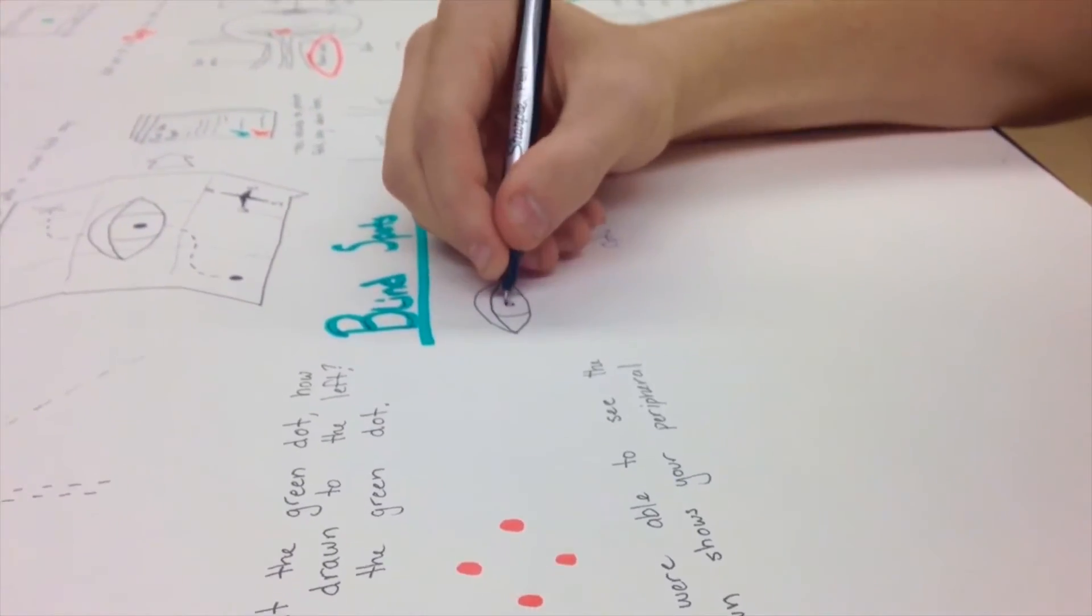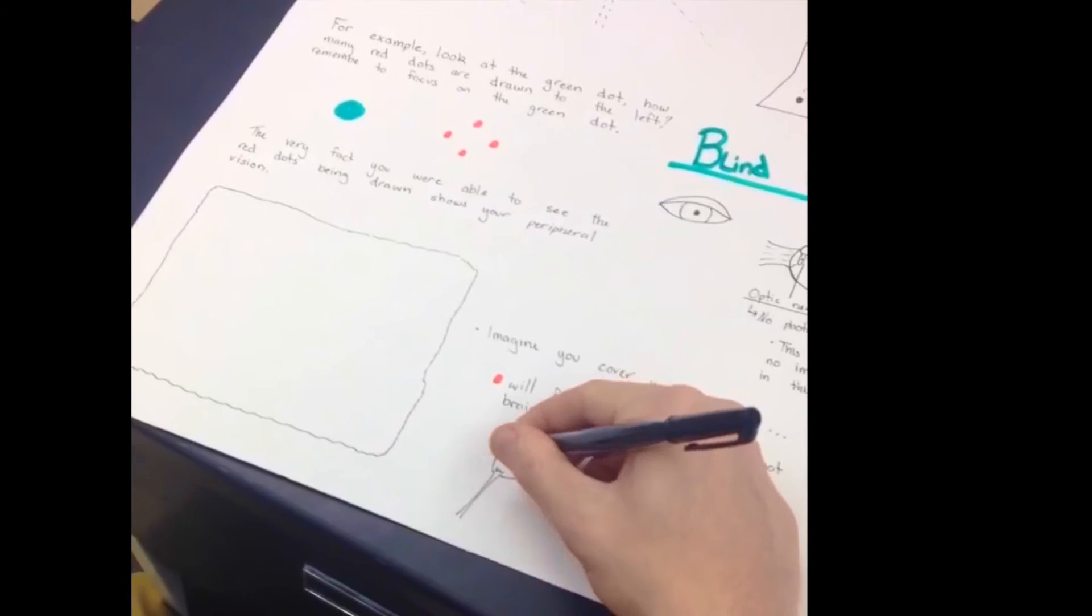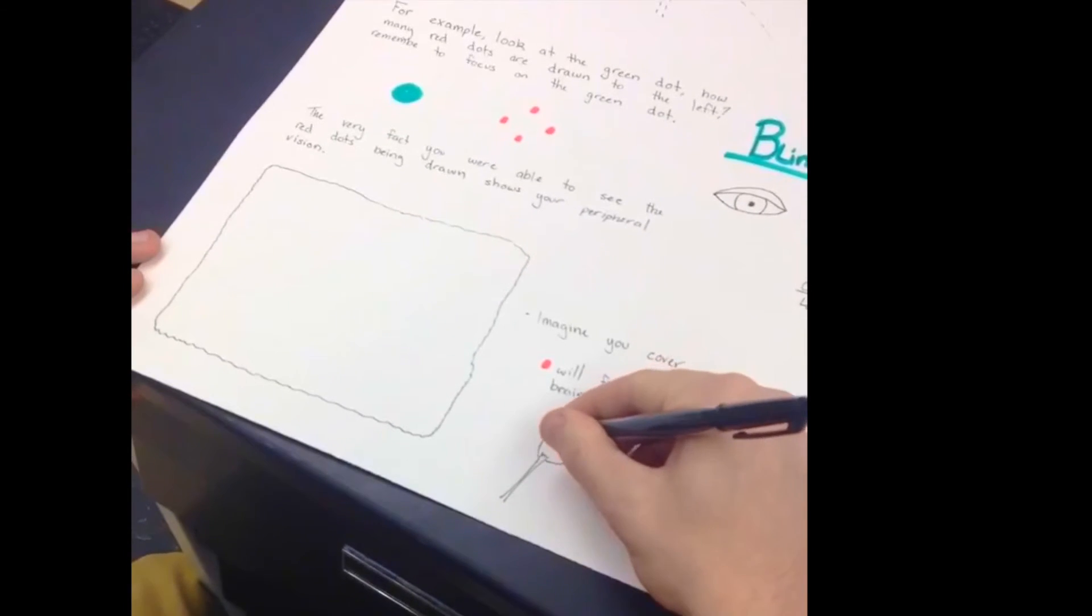Blind spots can be hard to detect because with both eyes open, the visual fields of each eye overlap. Eyes are very complex organs with many parts that work together to allow us to see.